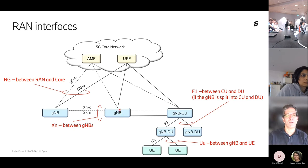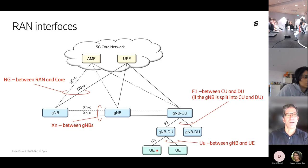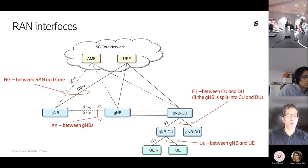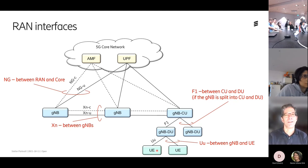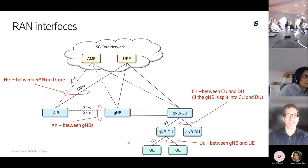Why is it called 'Node B'? That name goes back 20 years to 3G, when the base station was temporarily called 'Node B' and the name stuck. In 4G it became eNodeB (enhanced Node B), in 5G it's gNodeB (generalized Node B). We'll see what they call it in 6G — probably something with 'Node B' again.